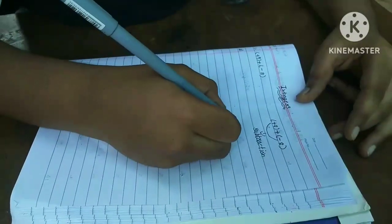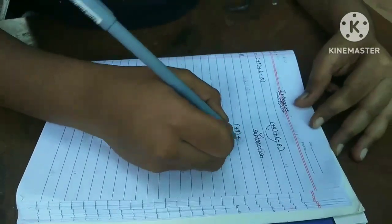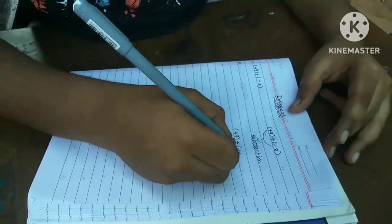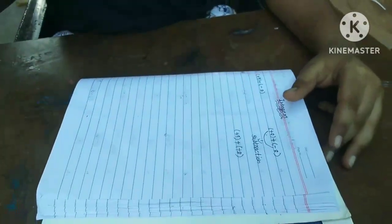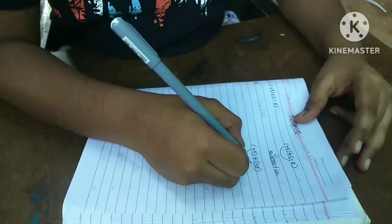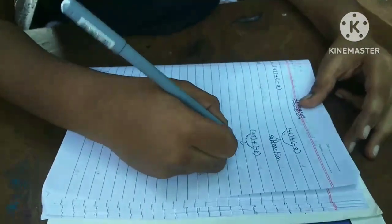Now, see. Plus 9 plus plus 8. Plus of plus 8. Now, both signs are same. Means addition.